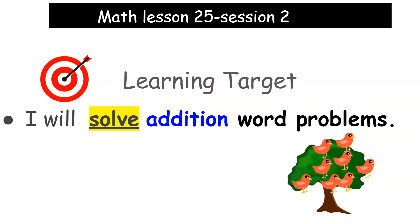So my word problem is there were eight birds in the tree. Two more birds joined them. How many birds are in the tree? There were eight birds in the tree. Two more birds joined them. How many birds are in the tree?